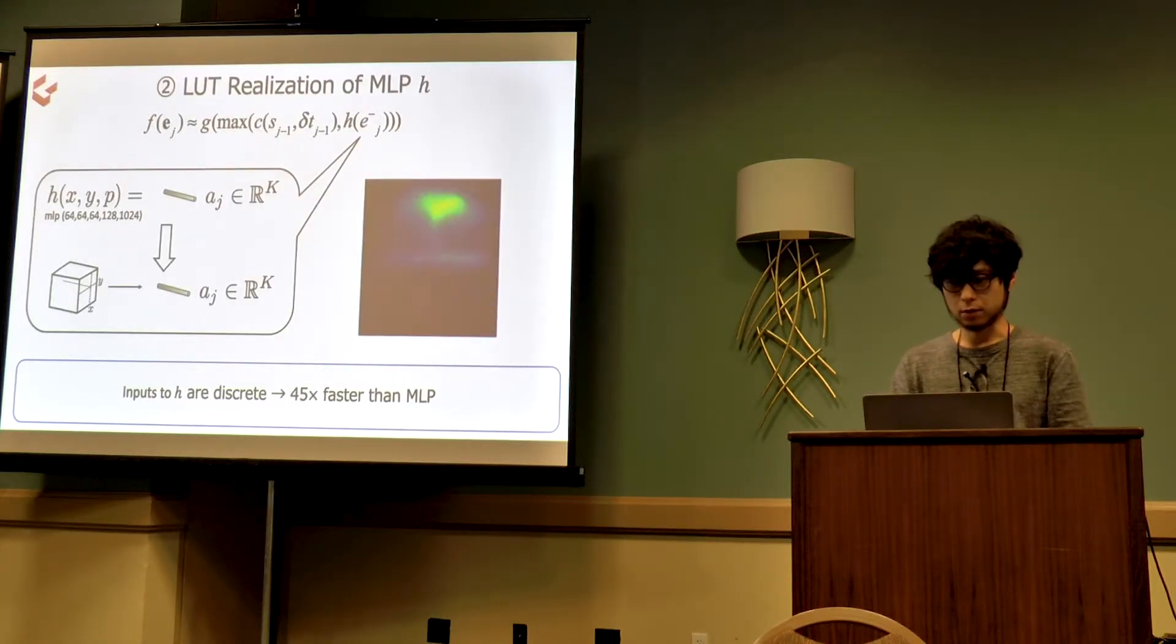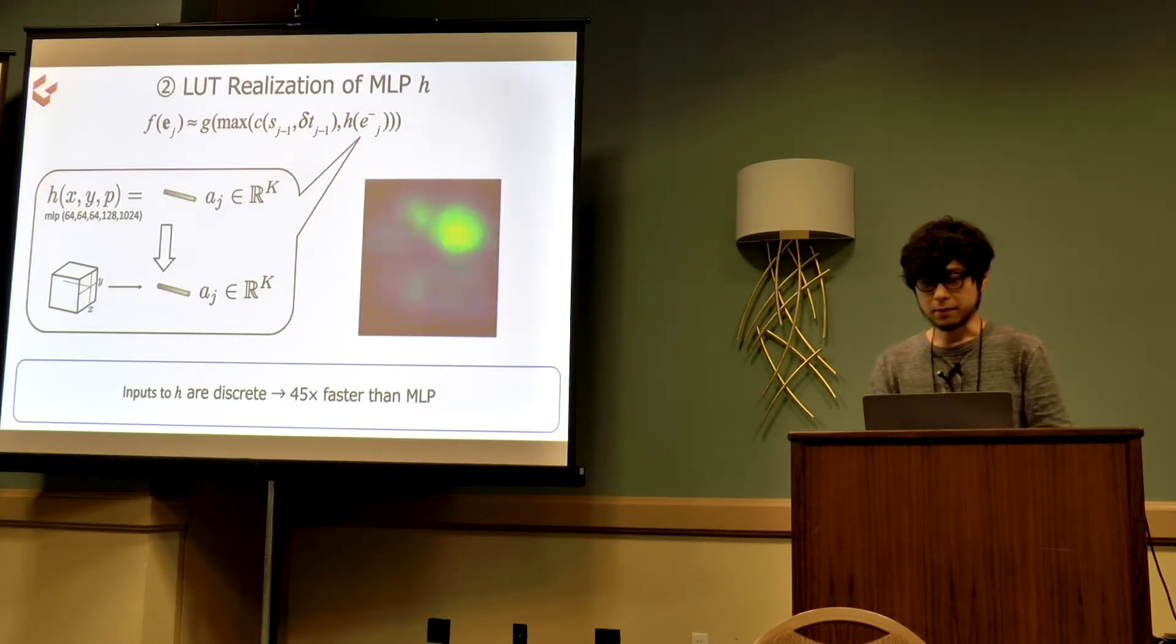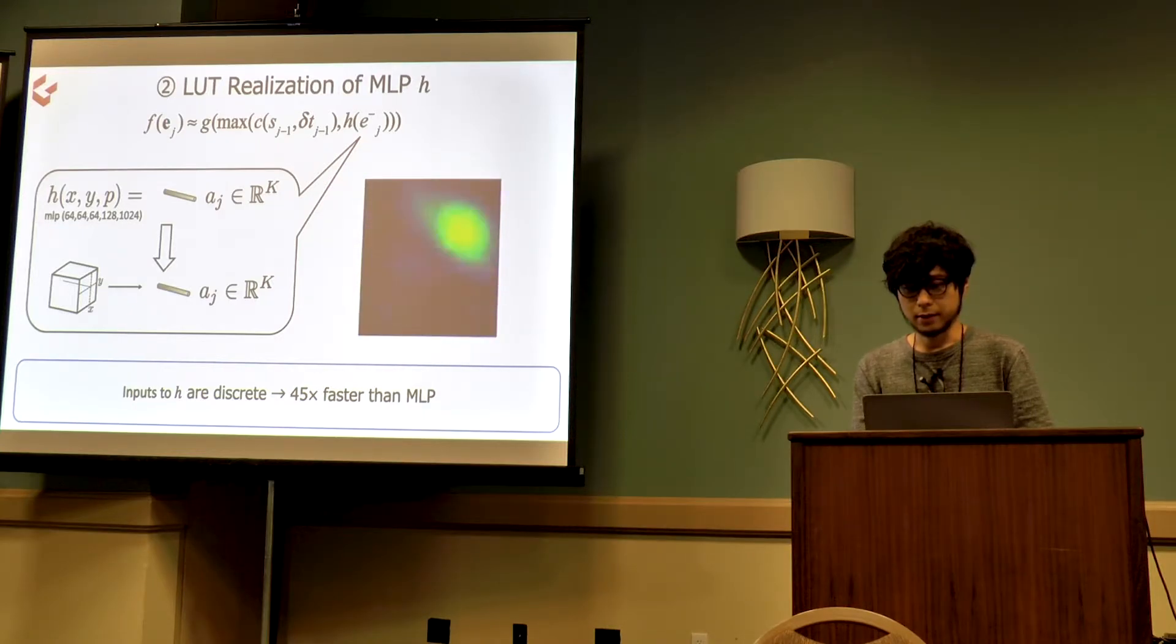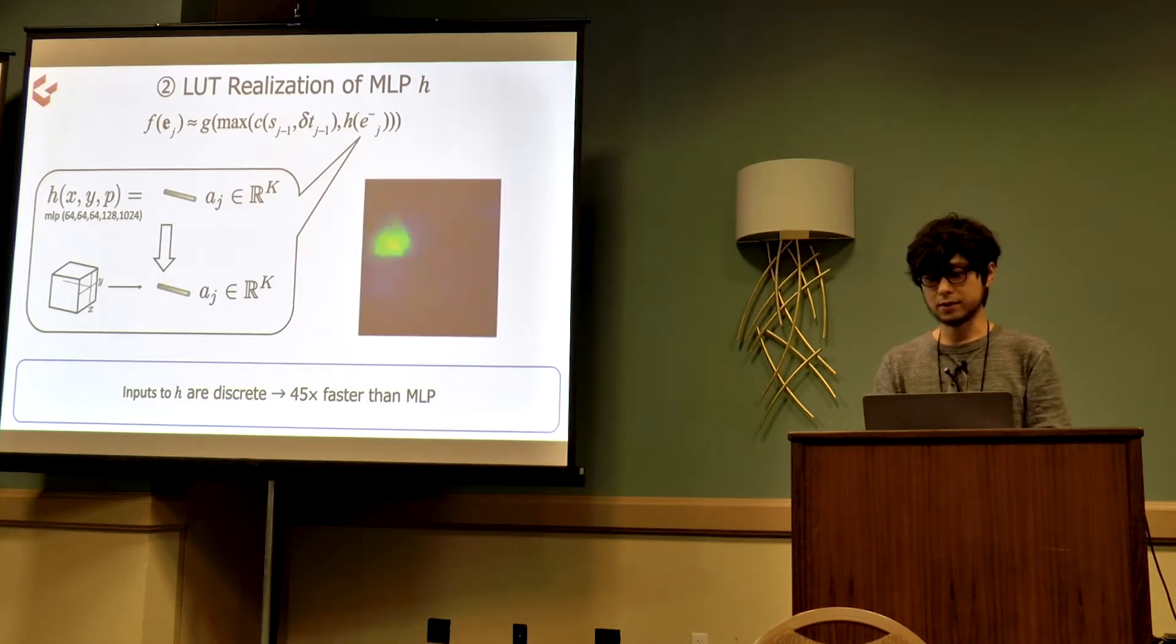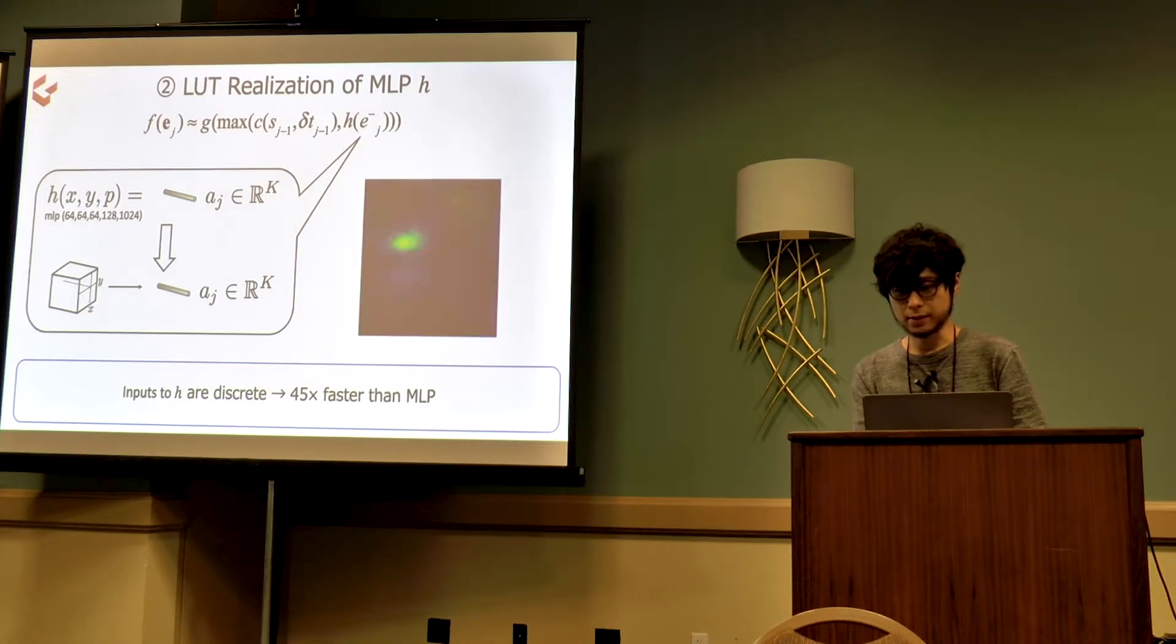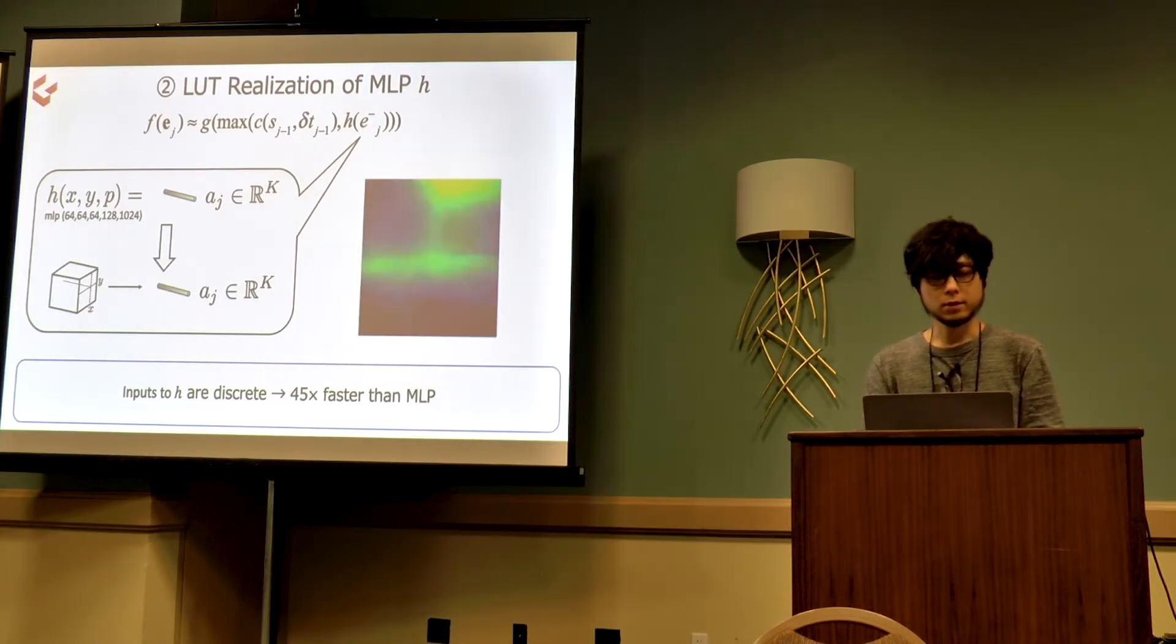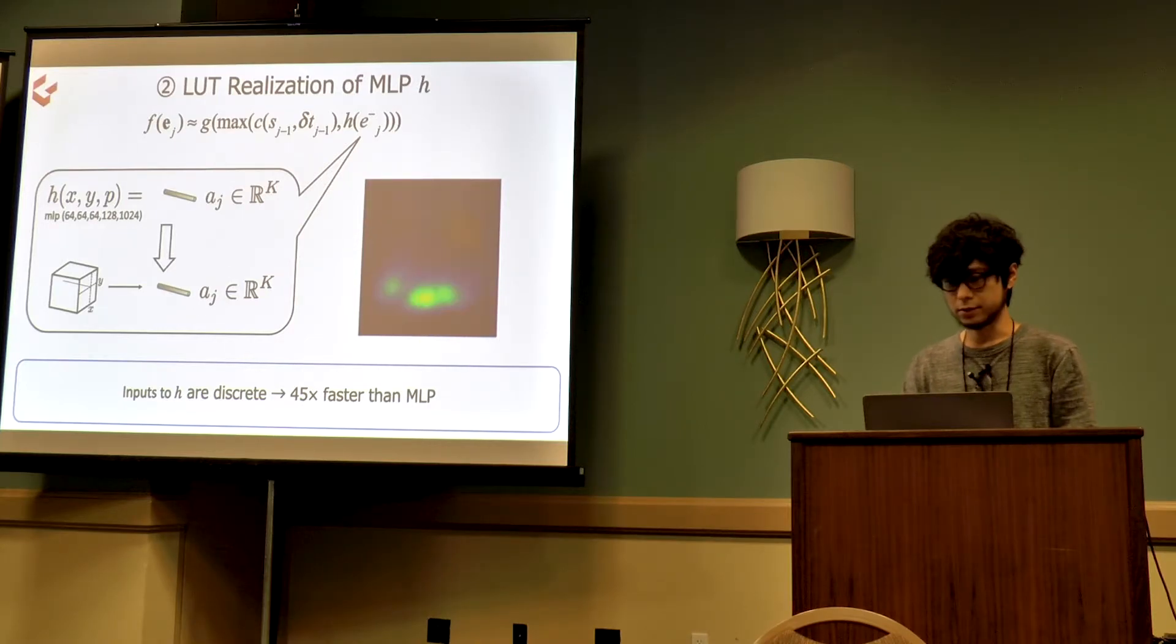Our second contribution is lookup table realization of MLP. Because the spatial position and polarity of event camera is discrete, the combination of input for function H is finite, and there are only W times H times two patterns. Therefore, we can precompute the result of MLP for inference. This is considerably faster than deep MLP H, which contains a large number of product sum operations. On the right, precomputed high dimensional vector is shown.